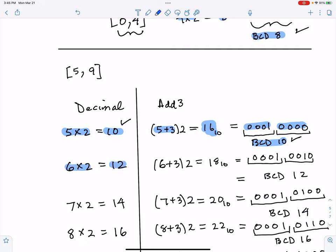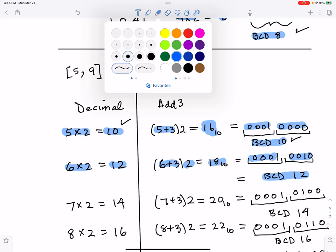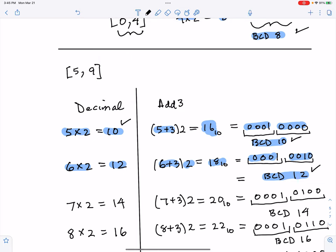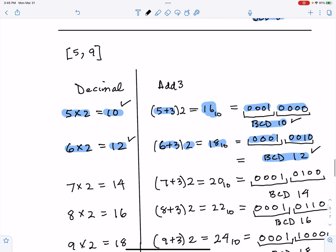6 times 2 is 12. 6 is greater than 5, so I add 3 to it before I double. 6 plus 3 is 9 times 2 is 18. 18 in decimal turns out to be 16 plus 2 in hex. And then if I convert that, if I look at that as a BCD interpretation, that would be BCD 12, which, that was my goal. I wanted this decimal multiplication to be represented in BCD.